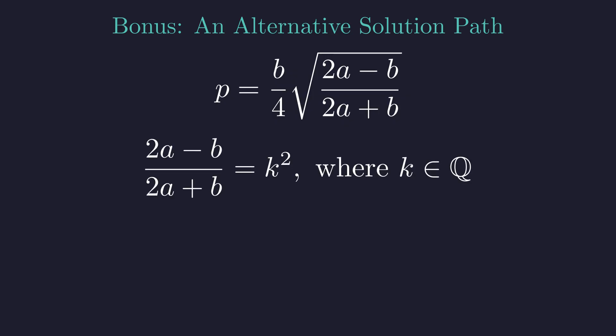Let's say this ratio equals k squared, where k is some rational number. This is the foundation of our parameterization. Now we can work with this algebraically. Cross-multiply to clear the fraction. Cross-multiplying gives us this equation. Distribute k squared on the right side.